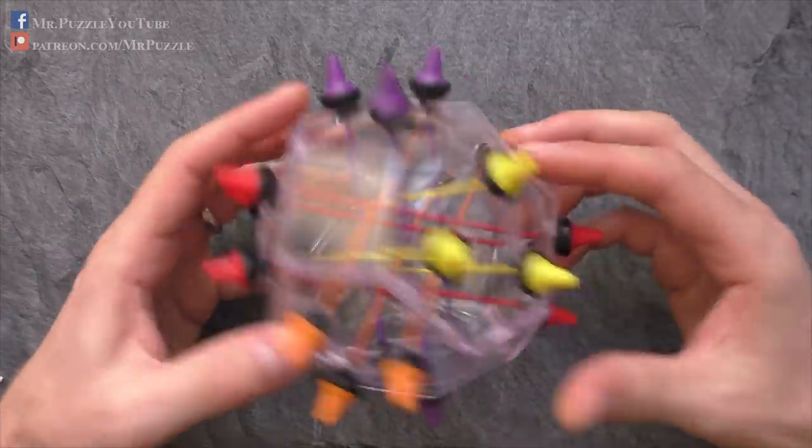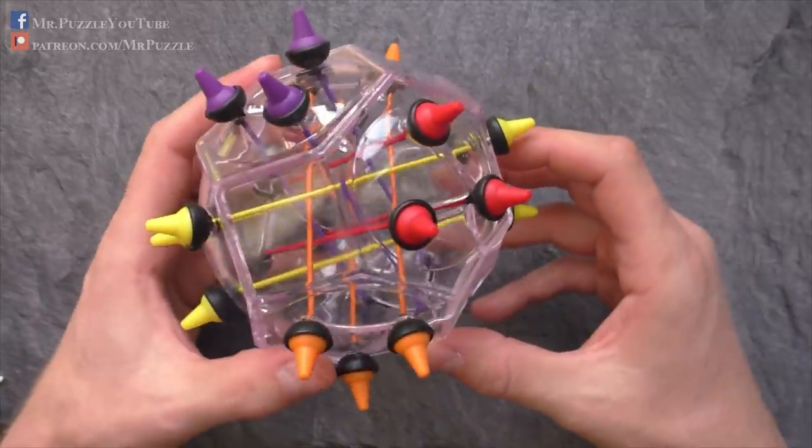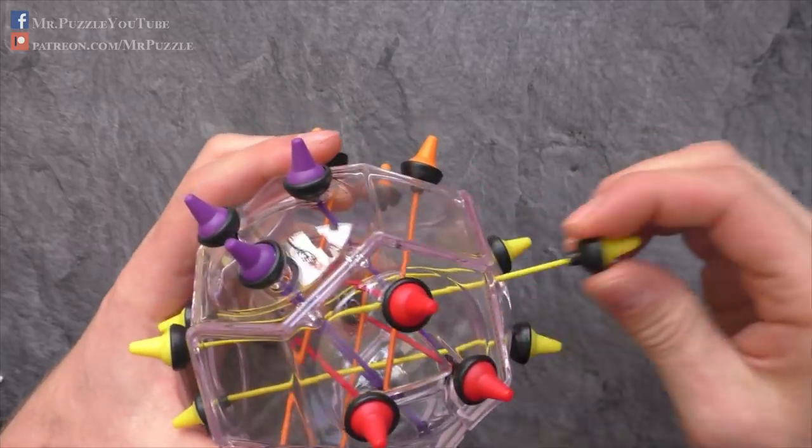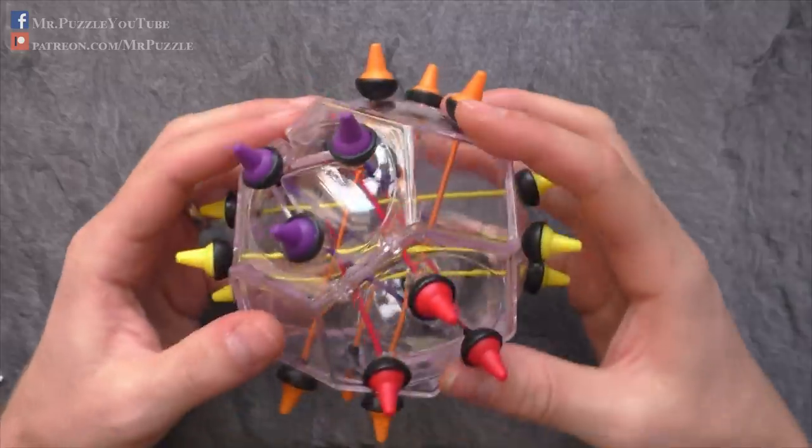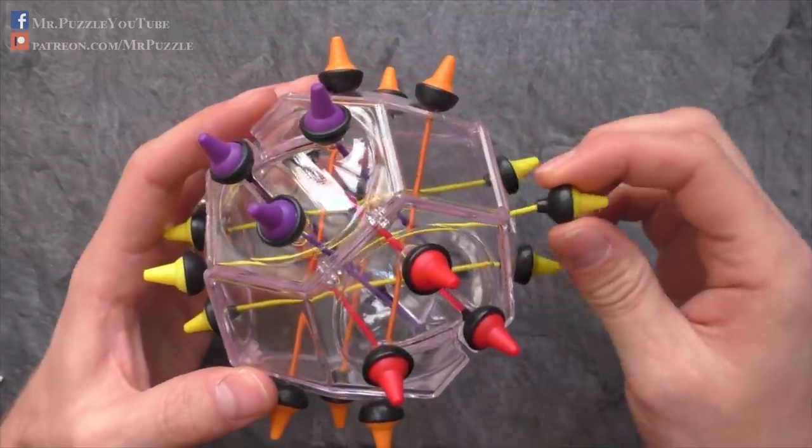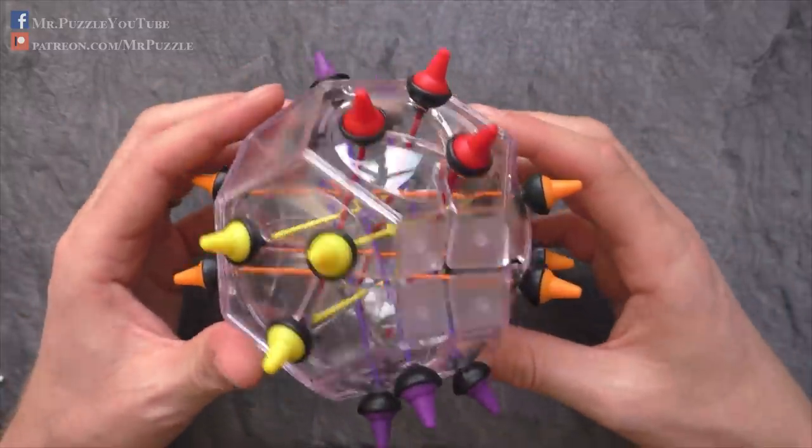So what do you do in this puzzle? Right now it's in the solved state. The solved state is when each string can go straight through the sphere to the other side without touching any other strings. This is the solved state.